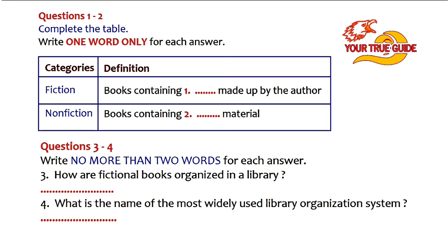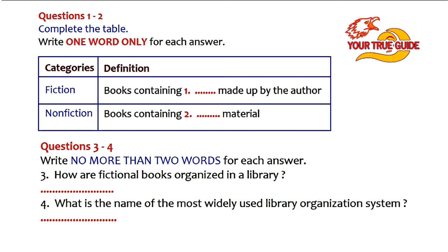My name is Cathy Smith. I'd like to give you a brief introduction about the library system. Every good student should learn how to use the library. If you have to do a research project, the library is the place to go for information. Libraries contain books and periodicals, magazines and newspapers on many different subjects. To find the information you need, you must know how to use the library. All libraries are organised in much the same way.